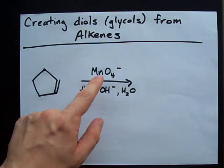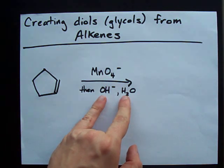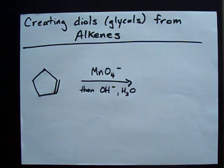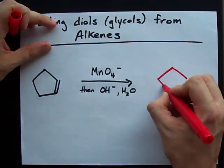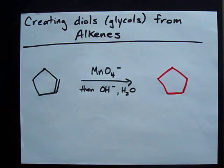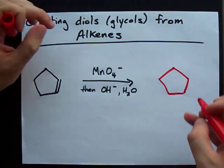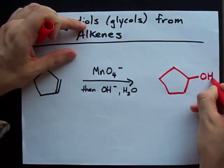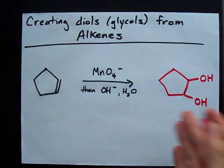When you use permanganate and then add a basic aqueous solution to it, you can actually break open the double bond — notice how it becomes a single bond — and just add an OH to each of the carbons that was involved with the double bond. Here's an OH, here's an OH. That's it. It's just done.